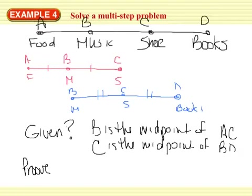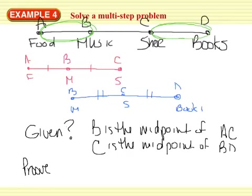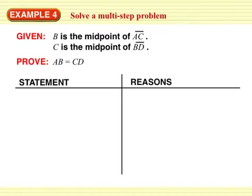We want to prove the distance between the entrances of the food court and the music store is the same as the distance between the shoe store and the bookstore. So we're trying to prove that AB is equal to CD. That was a lot of brain functioning — very confusing, but pictures help every time. Let's get a clean sheet of paper. B is the midpoint of AC. C is the midpoint of BD. We need to prove that AB is equal to CD.